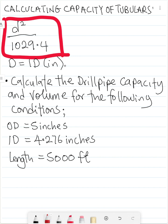d is your internal diameter, please take note, internal diameter, that's the ID while 1029.4 is just a constant that converts it to barrels per foot.